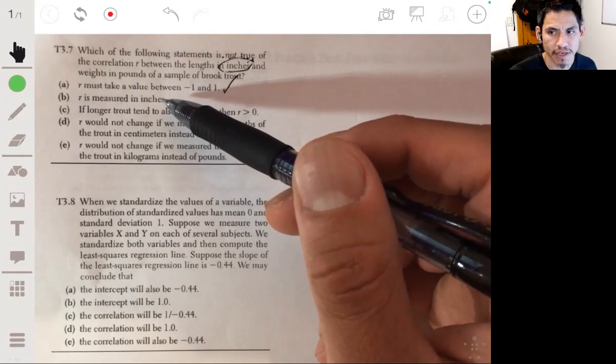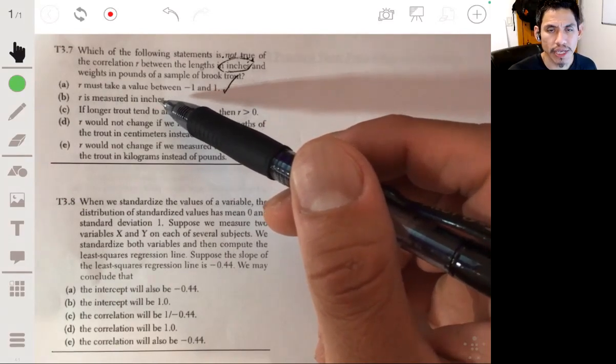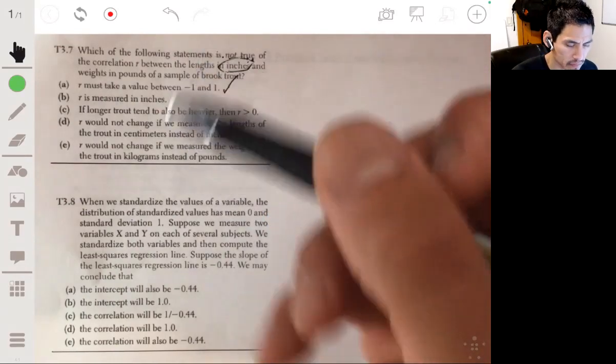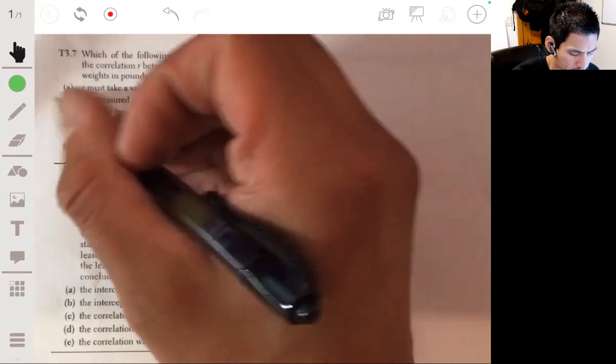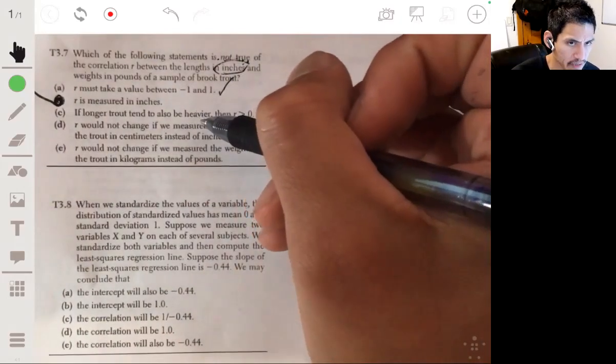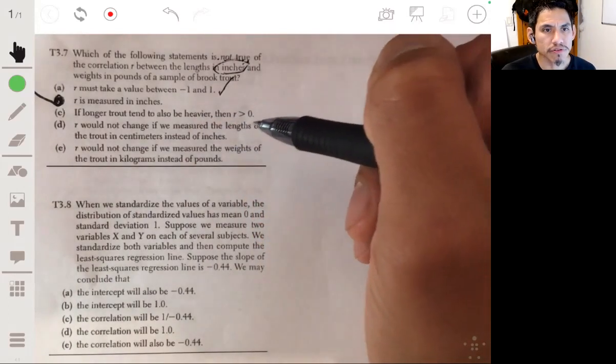correlation is not a unit of measurement. It's just a number, it doesn't measure feet, it doesn't measure weight, pounds. So our answer is B then, B is not true. Let me just go over C, D, and E, just to review some things.